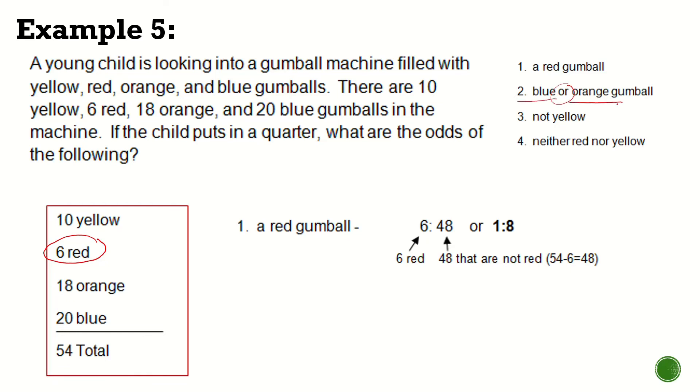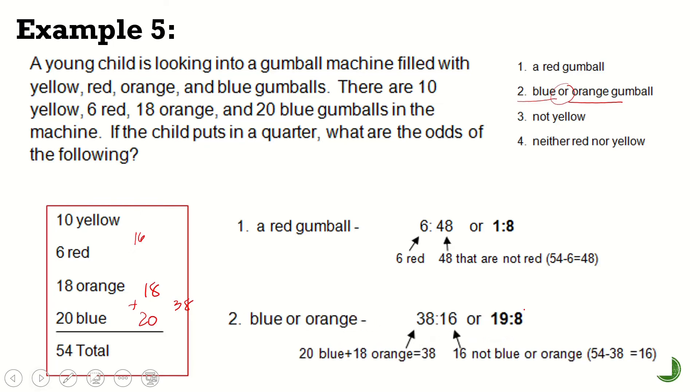So when you see that word or in math, it means addition. We add blue and orange. So how many blue? 20. How many orange is 18? That's equivalent to 38. If we add those two. So 38 is to the number of neither of those two, which is 16. That's 38 is to 16 or simplify that, 19 is to 8. Let's answer the third one.